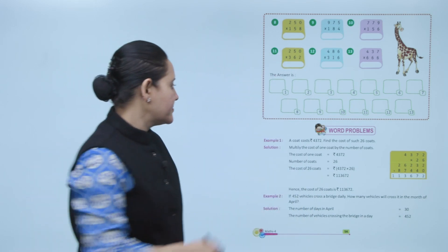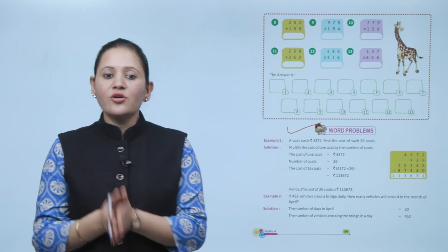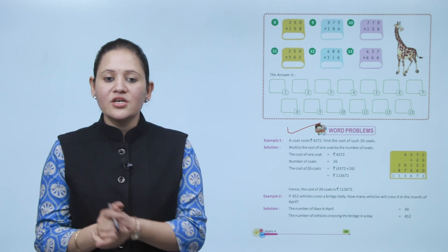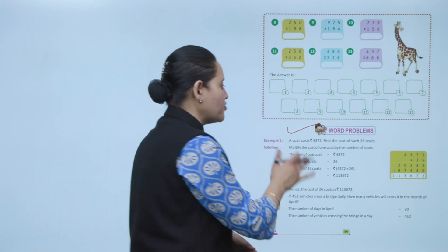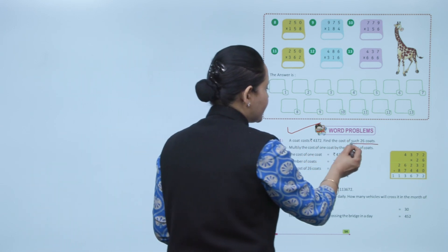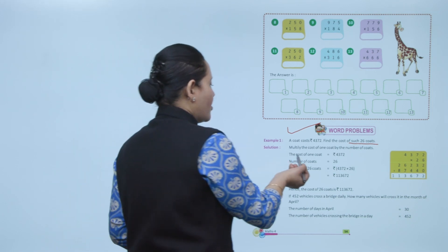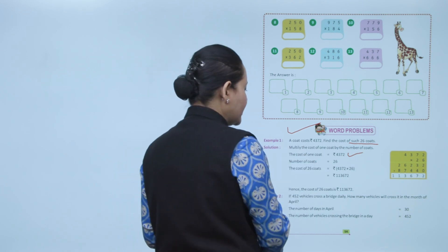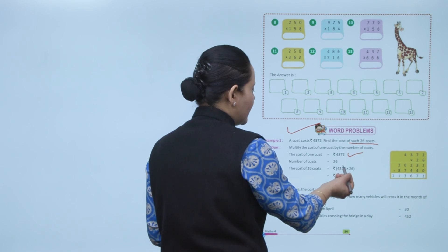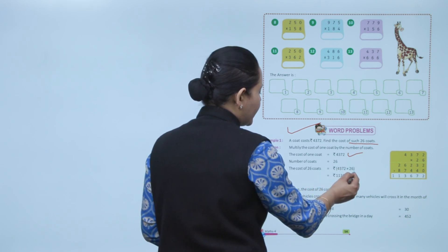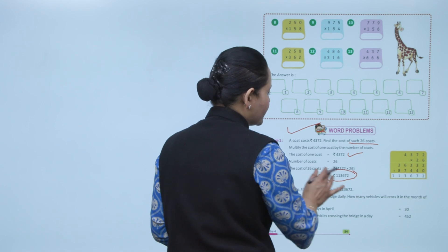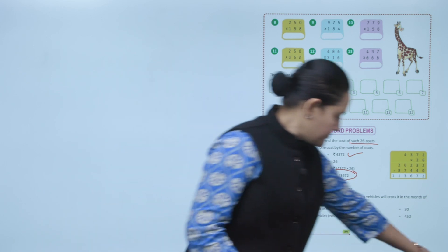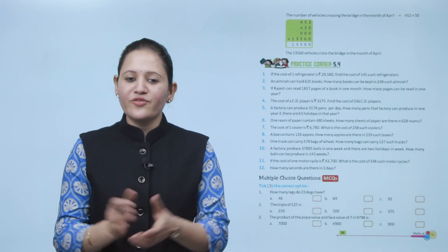Next, word problems. Find the cost of 26 coats if the cost of one coat is 4372 rupees. The number of coats is 26, so the total cost is 4372 multiplied by 26.